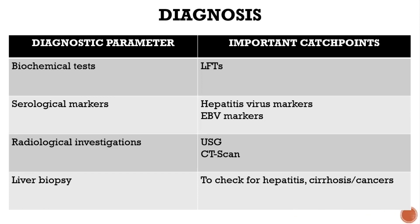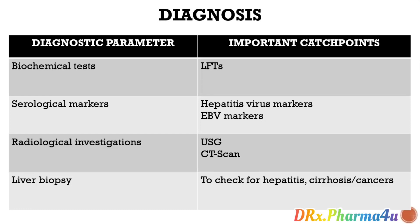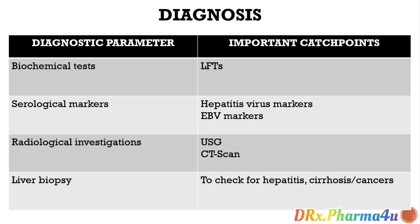Then we can go into radiological investigations. Ultrasonography or CT scan can reveal the extent of liver damage. Liver biopsy is much more specific — it gives a clearer understanding of hepatitis, cirrhosis, and even hepatocellular carcinoma.